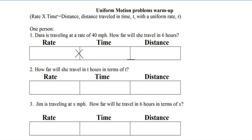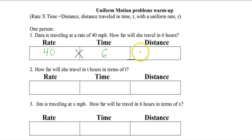I have it backwards because we're going to plug in the rate and the time and then multiply them. Dara is traveling at 40 miles per hour — that's our rate. How far will she travel in 6 hours? That's our time. The key is to make sure that your units match: hours and hours. When we multiply them, you get 240, and the unit right there is miles.